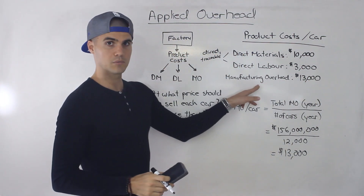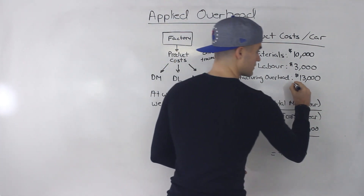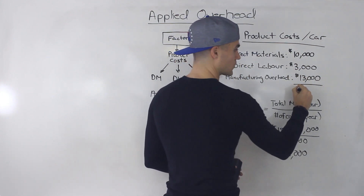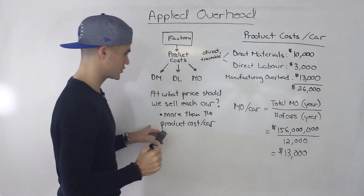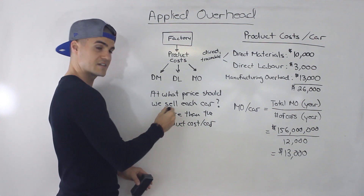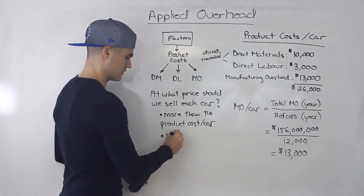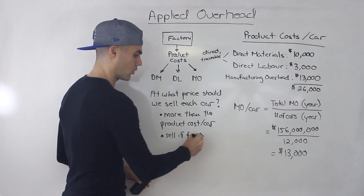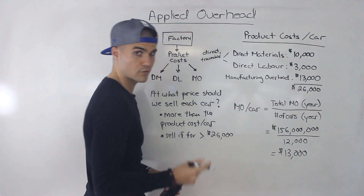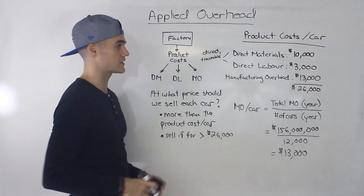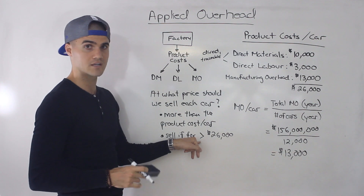So the manufacturing overhead per car is $13,000. If we total up all three product costs — $10,000 direct materials, $3,000 direct labor, and $13,000 manufacturing overhead — we get $26,000. Going back to our question, at what price should we sell each car? Definitely more than the product cost per car, so more than $26,000. It's probably going to be a lot over $26,000 because we'll also have to cover period costs.